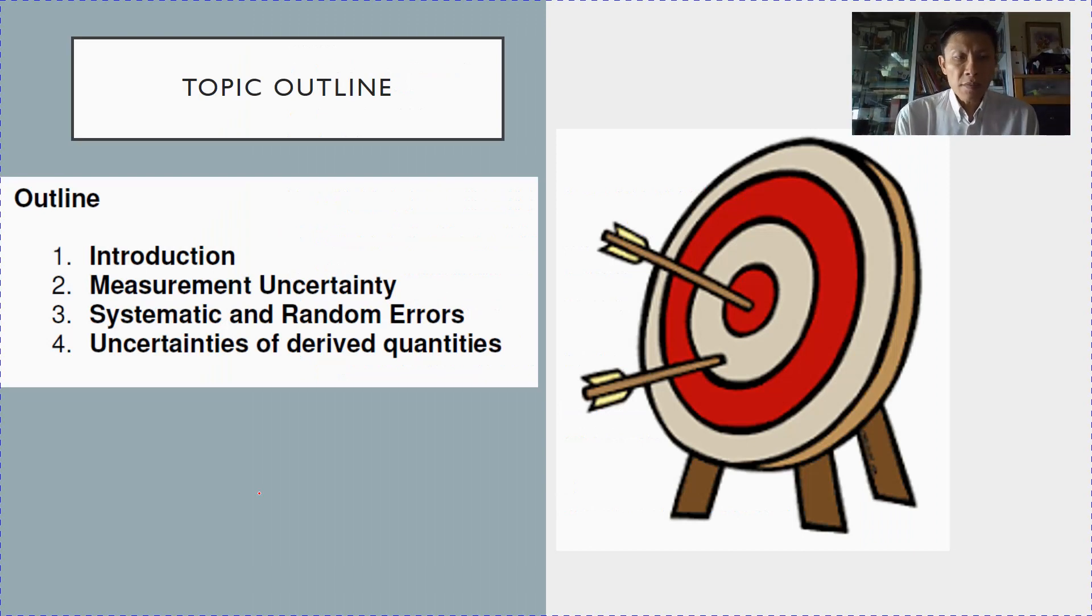The outline for this topic would be as such. There are three lectures for this topic. The first lesson, I will take you through introduction as well as measurement uncertainty. The second lesson, we will go through systematic and random errors. And the last lesson, then we learn how to use mathematical shortcuts to calculate the uncertainties of derived quantities.